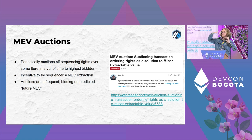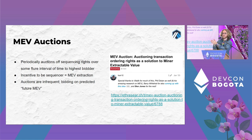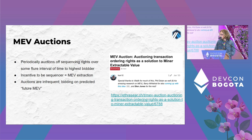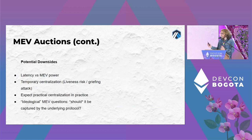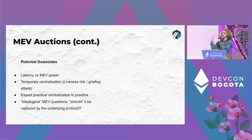Importantly, these auctions have to be infrequent. Potential sequencers aren't looking at specific transactions and bidding on them — they're bidding on their future potential for ordering. You can't have frequent sequencer turnover because at any given point you need to know who the sequencer is so it can give fast transactions. Think on the order of hours or maybe days. The tension is that this design depends on the ability to order transactions and extract MEV, which is inherently at odds with giving low latency.